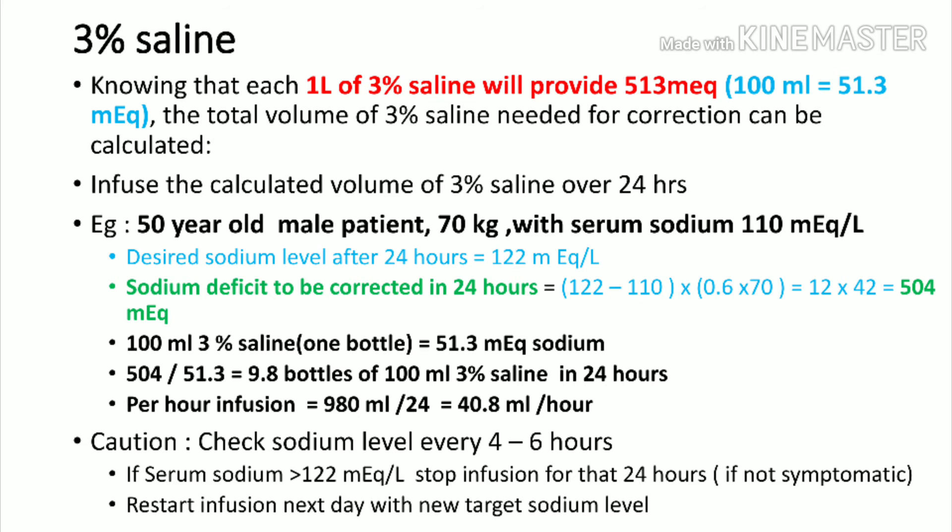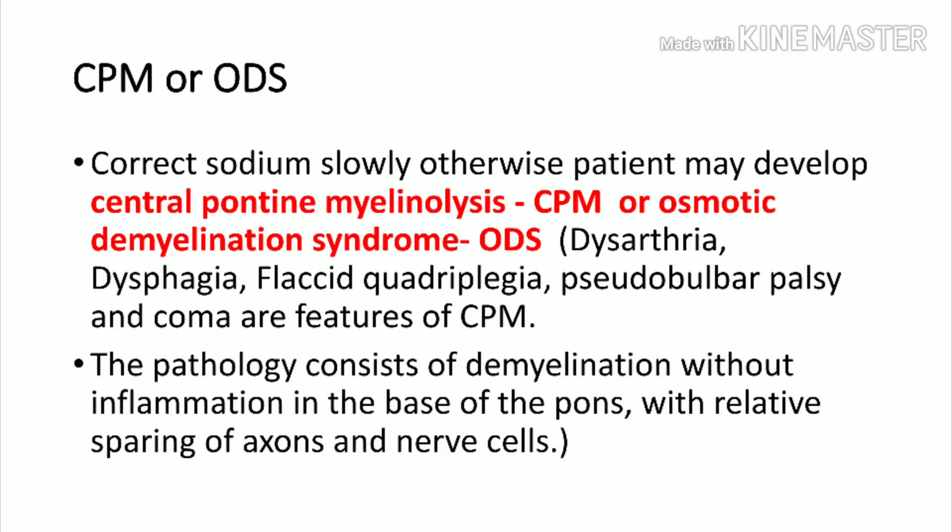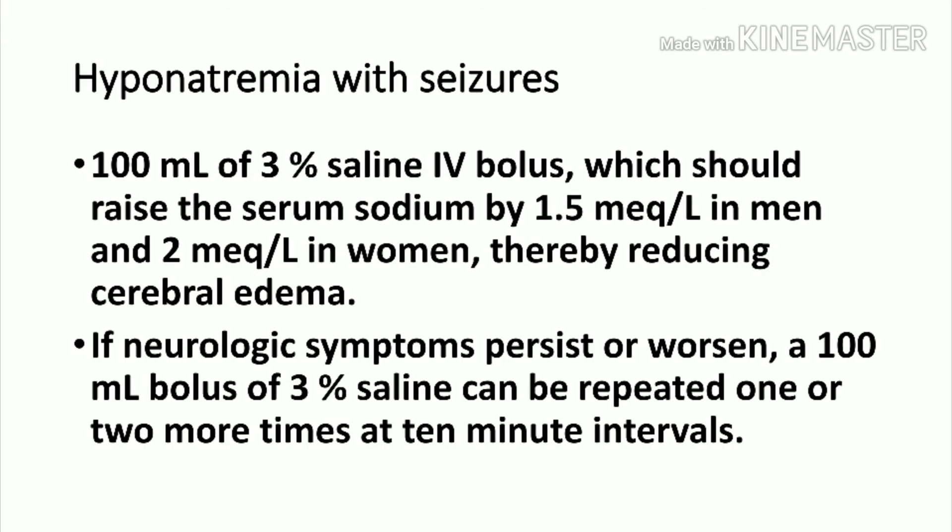Sodium infusion must not be given too fast. Check serum sodium every four to six hours. If correction exceeds 8 to 12 milliequivalents in 24 hours, immediately stop the infusion. Overcorrection can cause osmotic demyelination syndrome, also called central pontine myelinolysis — demyelination in the pons or extrapontine areas. For patients with seizures, give 100 ml of 3% saline IV bolus rapidly, which raises sodium by 1.5 milliequivalents per liter in males and 2 milliequivalents per liter in females; repeat if symptoms persist.